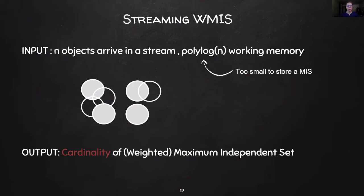Instead, we relax our goal and focus on outputting the cardinality of MIS, which is just a number between 1 and N and can be represented with log n bits. For the remainder of the talk, we shall focus on objects with unit length and radius. Our paper also includes results for arbitrary length intervals, which we won't get to in this talk.